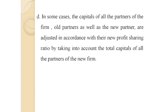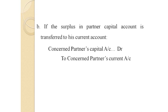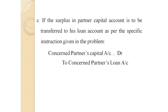The entries for adjusting partners' capital accounts are as follows. For adjustment of a surplus in a partner's capital account: if the surplus is withdrawn in cash — Concerned Partner's Capital Account Dr. to Cash/Bank Account. If the surplus is transferred to the current account — Concerned Partner's Capital Account Dr. to Concerned Partner's Current Account. If the surplus is transferred to a loan account — Concerned Partner's Capital Account Dr. to Concerned Partner's Loan Account.